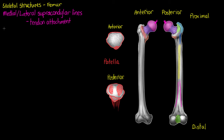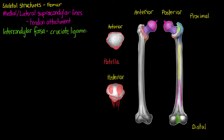The next feature, highlighted in green, is called the intercondylar fossa. The intercondylar fossa is just a depression between our two condyles that acts as the attachment point for our cruciate ligaments.